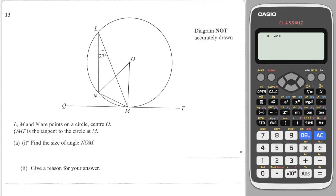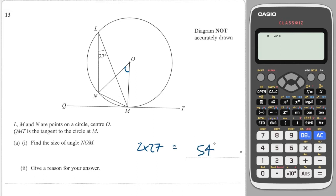Next question: we're asked to work out angle NOM — that is this angle in here. That angle is 2 × 27° = 54°.